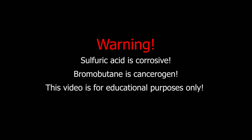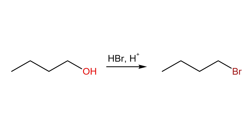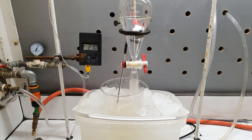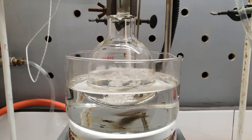Warning: sulfuric acid is corrosive and bromobutane is a carcinogen. This video is for educational purposes only. I wanted to show you a synthesis reaction but didn't have a halogen-substituted alkane. Fortunately, it's relatively simple to make one from an alcohol. In this video I will show you how 1-butanol is converted to 1-bromobutane under laboratory conditions.